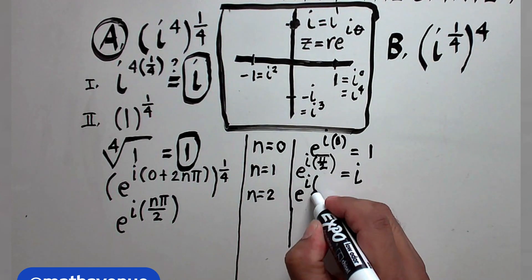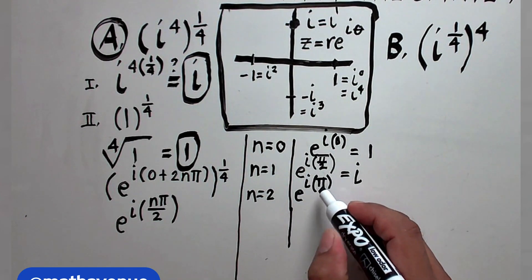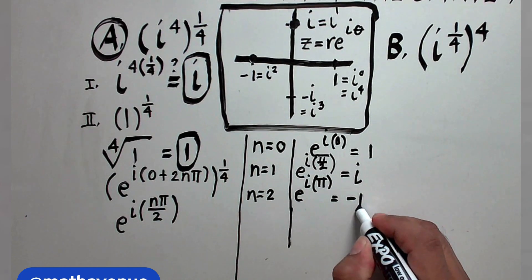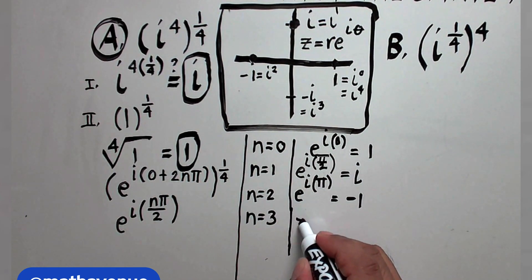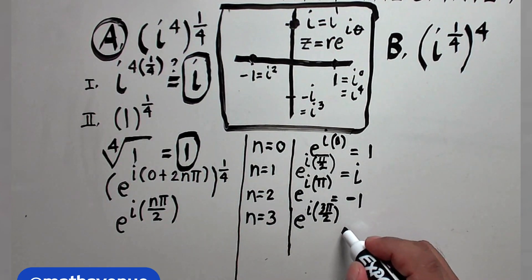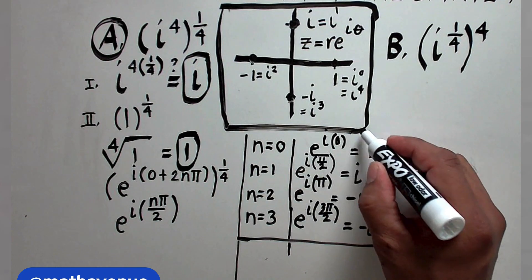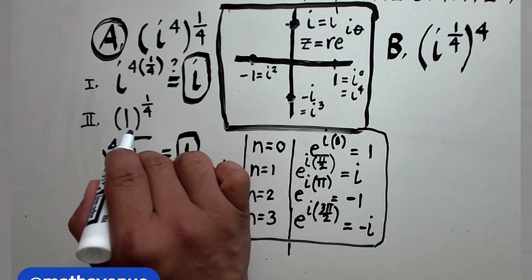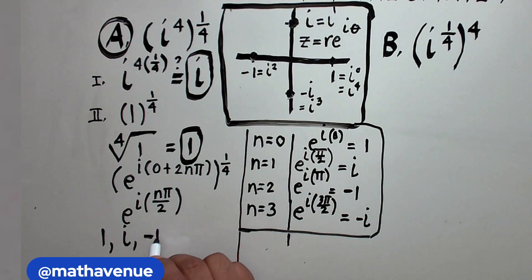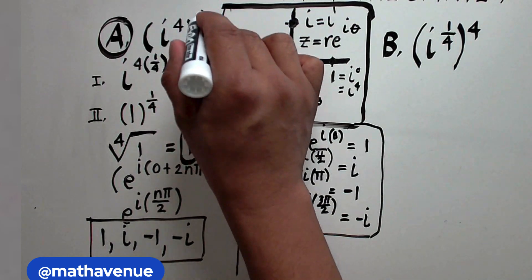For n = 2: e^(i·π), where the angle is π and the radius is 1 — that is the point negative 1, equal to i squared. For n = 3: e^(i·3π/2), and at angle 3π/2 with radius 1, that equals negative i. So the fourth root of 1, meaning 1 raised to one fourth, has four possible values: 1, i, negative 1, and negative i.